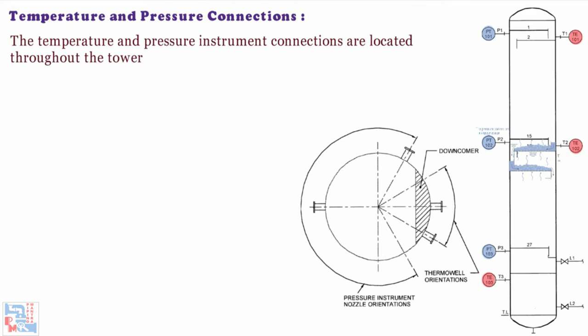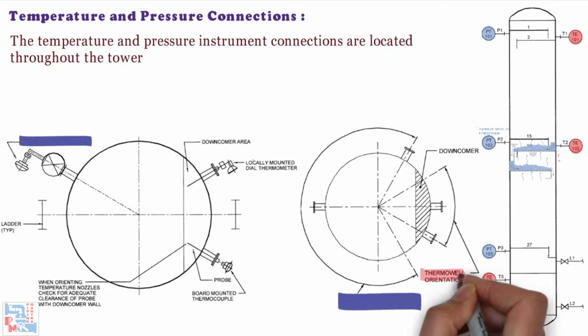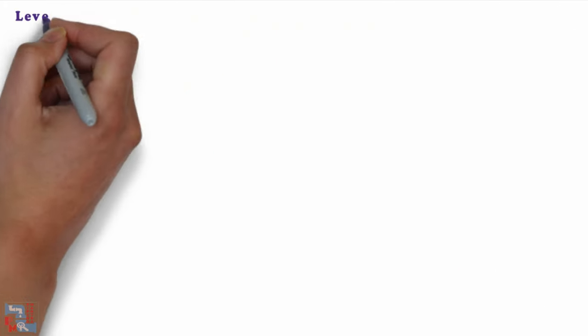On your screen, you can see the range of orientation of pressure instrument and temperature connection on single level of tray. Clearance of temperature probe with down cover wall should be checked while orienting the temperature instrument nozzles.